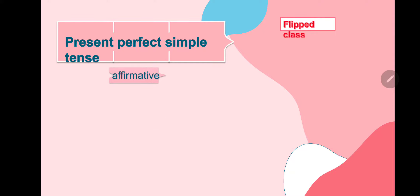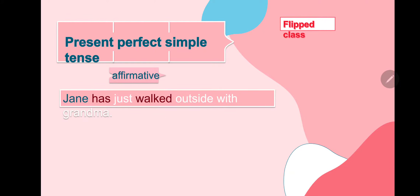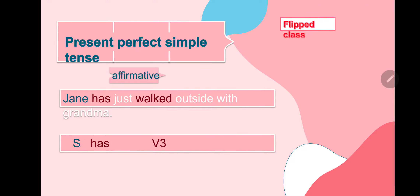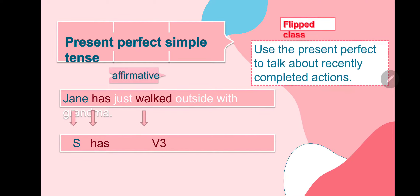Present perfect simple — affirmative. In an affirmative sentence: Jane has just walked outside with her grandma. Jane is the subject. We use has after she/he/it, and have after I/you/we/they, followed by verb 3.